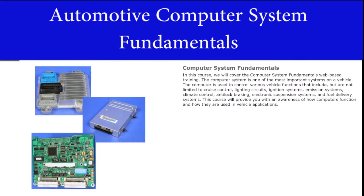In this course, we will cover the Computer System Fundamentals web-based training. The computer system is one of the most important systems on a vehicle. The computer is used to control various vehicle functions that include, but are not limited to, cruise control, lighting circuits, ignition systems, emission systems, climate control, anti-lock braking, electronic suspension systems, and fuel delivery systems. This course will provide you with an awareness of how computers function and how they are used in vehicle applications.